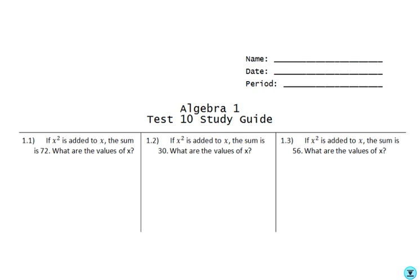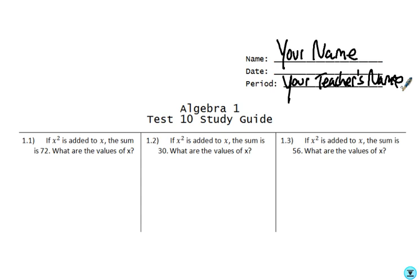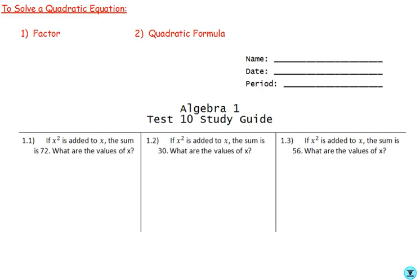Before we get started, just a couple quick things. First, top right-hand corner, go ahead and write your name, and because you may be coming from a different teacher, write your teacher's name too. The format of the video: on the study guide there are three columns — left, middle, right. I'll do the problem on the left side, then have you pause and try the problem in the middle and right. The three problems across are pretty much the same with slightly different numbers. Number one on the test matches number one on the study guide, and so on. This test covers quadratic equations.